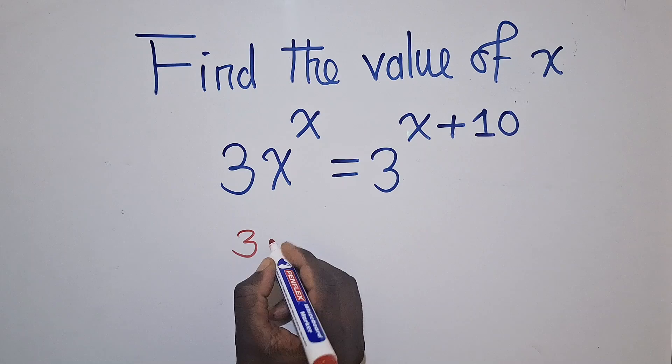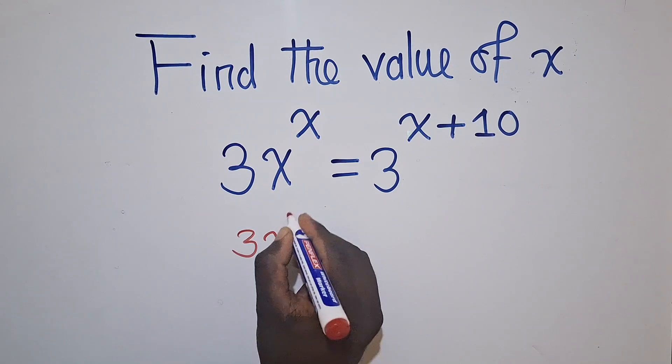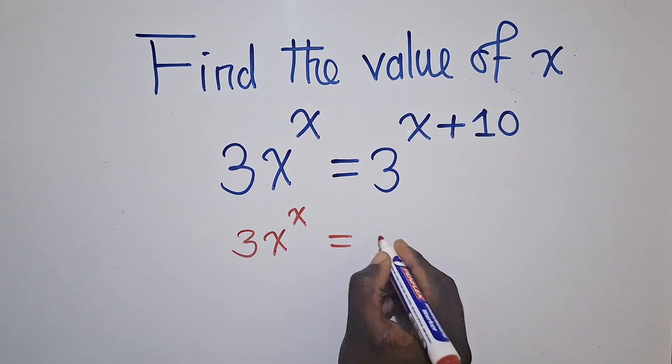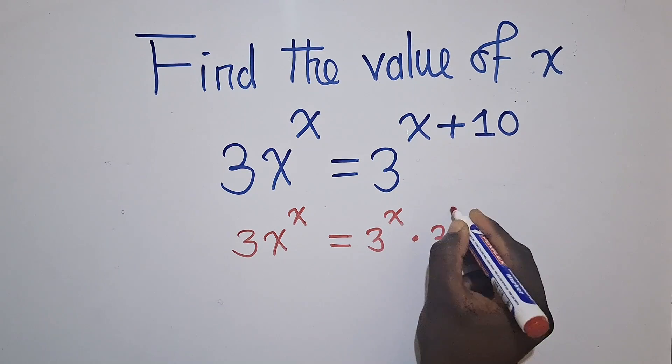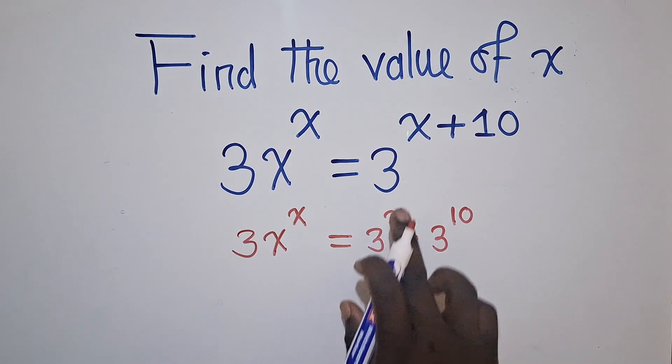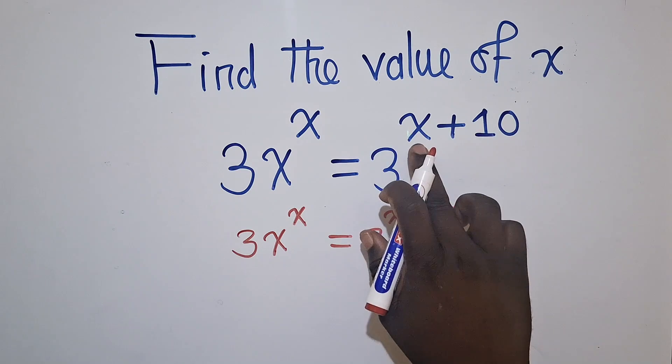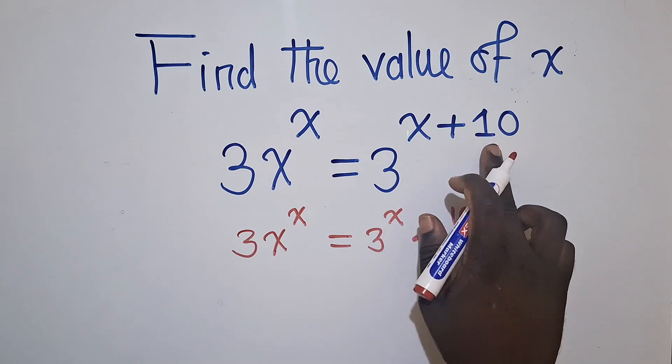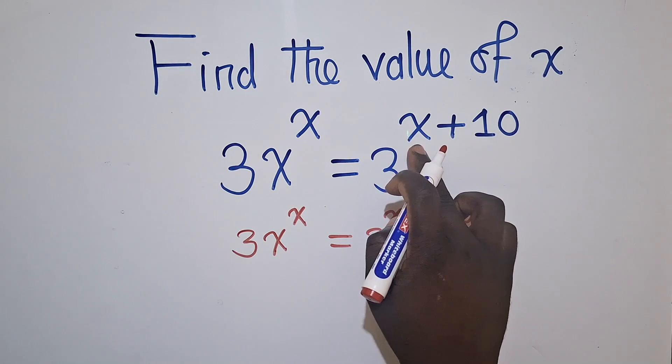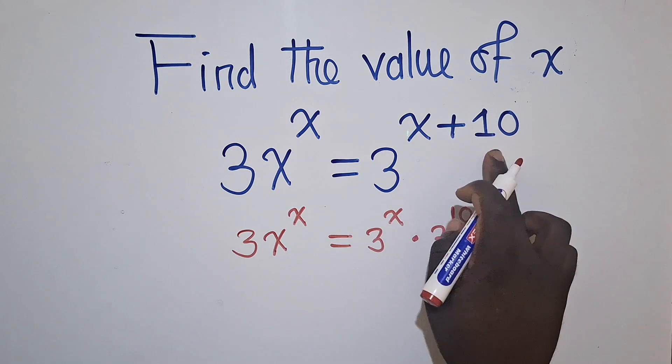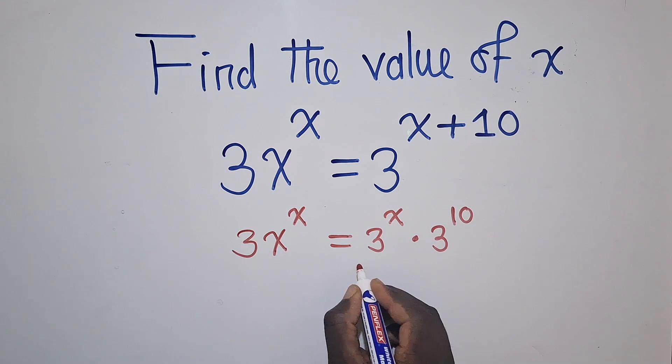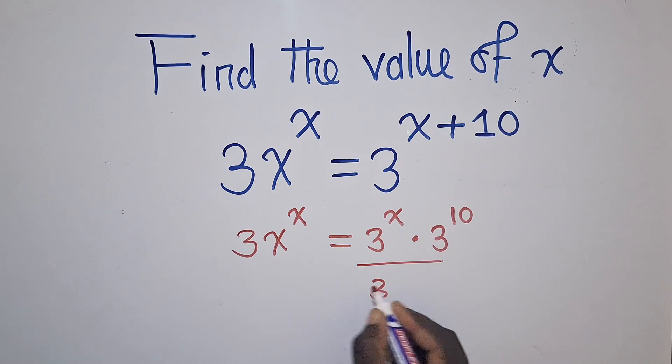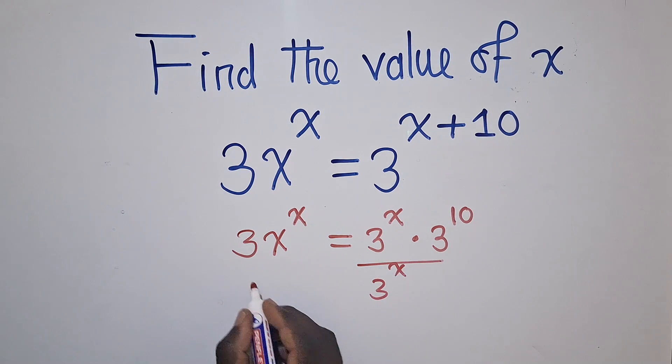we are going to write 3X power X is equal to 3 power X times 3 power 10. Applying the laws of indices here, when you are adding the powers, it means this base power this multiplied by this same base power this. And this is what I've done right here. And then we separate everything with X to one side of the equation.